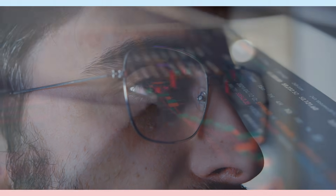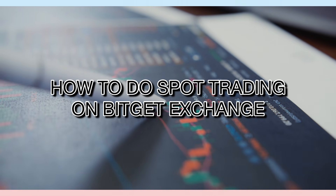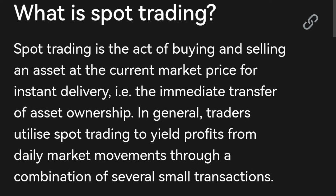In this video, I'll show you a quick tutorial on how to do spot trading on BitGet mobile app for beginners. Spot trading is an act of buying and selling an asset at the current market price for instant delivery, like the immediate transfer of asset ownership. In general, traders utilize spot trading to yield profits from daily market movements through a combination of several small transactions.